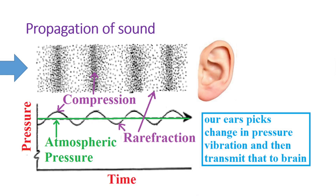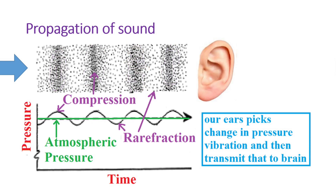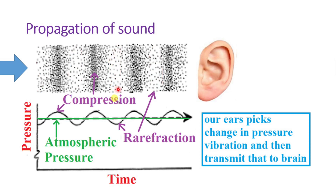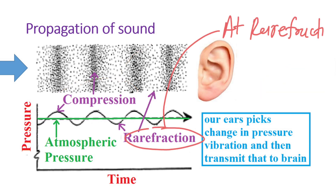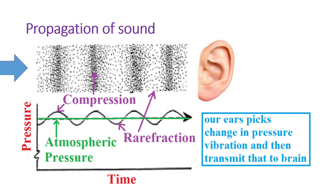Sound wave propagation happens based on condensation and rarefaction. Condensation means compression — compression of molecules. Where rarefaction is present, density of molecules is less. Where compression is present, density of molecules is more. This compression and rarefaction pushes the air, and that is because of pressure difference — compression causes higher pressure, and rarefaction causes lower pressure. This pressure difference pushes air particles and that makes propagation of sound.